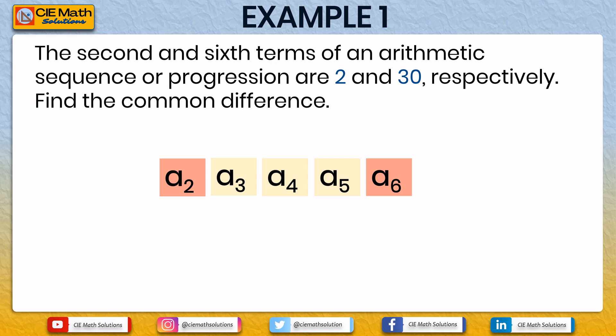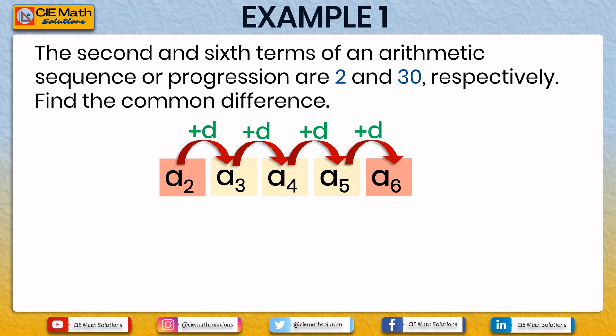We can get A3 by adding the common difference d to A2, so A2 plus d equals A3. Similarly, A3 plus d equals A4, A4 plus d equals A5, and A5 plus d equals A6. How many times did we add the common difference from A2 all the way up to A6? There are 4 d's added from A2 to A6.